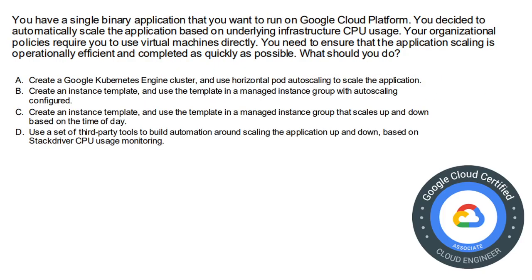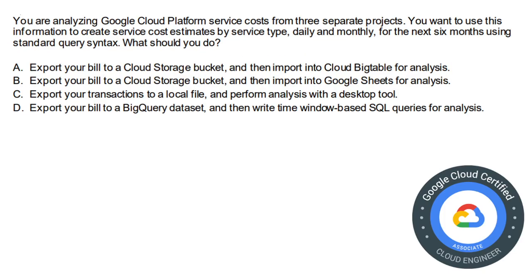Moving on to the next question. You have a single binary application you want to run on Google Cloud Platform and automatically scale based on the underlying infrastructure. Your organizational policies require you to use virtual machines directly, and you need scaling to be operationally efficient and complete as quickly as possible. The options are: A) GKE cluster with horizontal pod autoscaling; B) Create an instance template and use it in a managed instance group with autoscaling configured; C) Managed instance group that scales based on time of day; D) Third-party tools with Stackdriver CPU monitoring. The correct answer is option B.